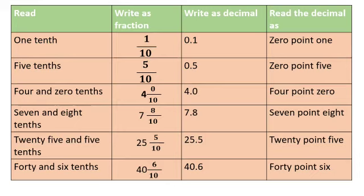A whole number and 8 tenths means 8 by 10. In decimal, the whole number you write as it is, and 8 by 10 means 0.8 - so for example 7 whole number and 8 tenths is 7.8. Next: 25 whole number and 5 tenths, write in fraction: 25 and 5 by 10. In decimal: 25.5. Next: 40 whole number and 6 tenths means 40 and 6 by 10. In decimal: 40.6.